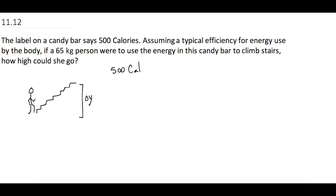500 big C calories. So how much energy is that? Let's turn that into joules. So we know in one big C calorie, there's 1,000 little c calories. And then from the constants page, up on the top right under the resources tab, you go down to conversion factors.